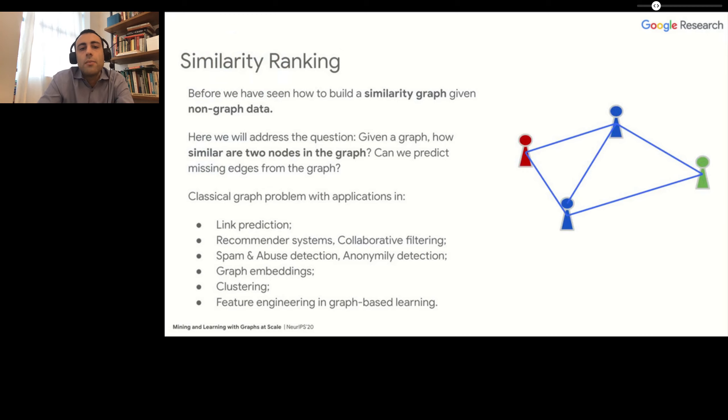This is a very classic problem in machine learning and graph mining and it has many applications, including link prediction, recommender systems and collaborative filtering, as well as spam and abuse detection and anomaly detection. We will also see other applications that might be less known for similarity ranking, including graph embeddings, clustering, and feature engineering.